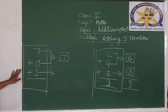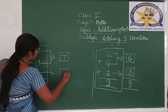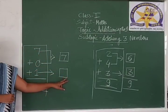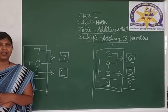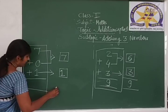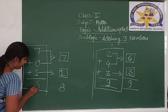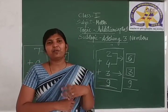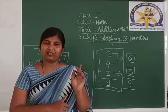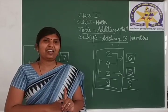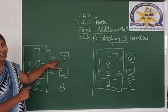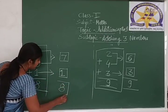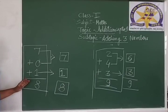Now we add the third number. We are going to add 1 to the sum of these 2 numbers: 7 plus 0, which gives 7. Then we add the third number 1. 7 plus 1 equals 8. When we add 1 to any number, we get the after-number of that number. Always remember: when we add 1 to any number, we get the next number. So 7 plus 0 plus 1 equals 8.